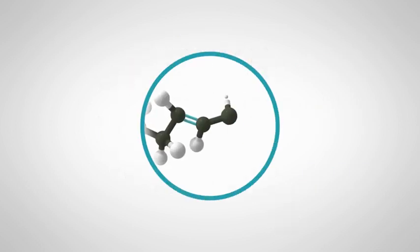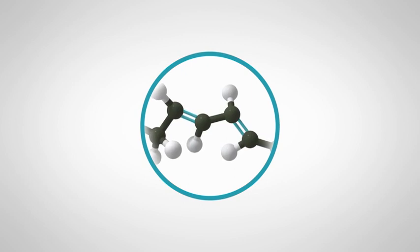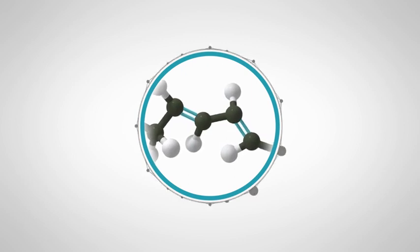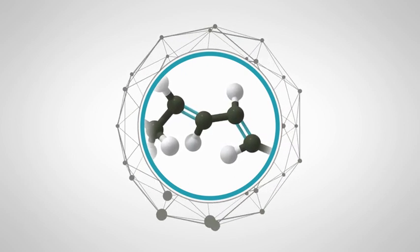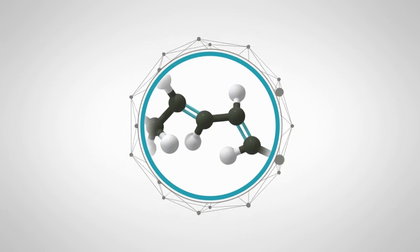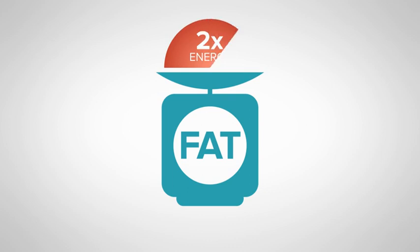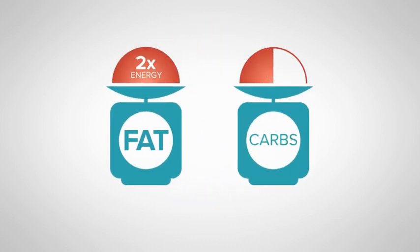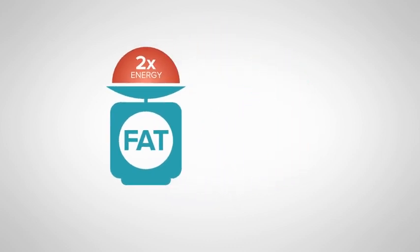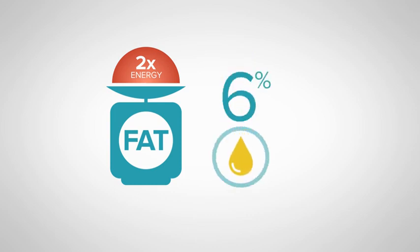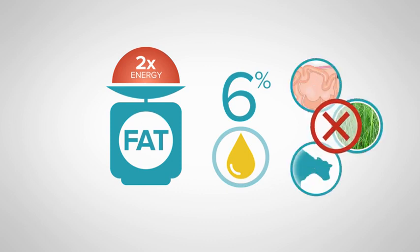The number and position of these double bonds alters the way the fatty acids are digested and can also alter their biological activity. On a weight basis, fat contains more than twice the energy content of carbohydrates. However, only a small amount — no more than about 6% — can be included in the cow's diet. This is because too much fat in the diet can negatively affect rumen function, reduces dry matter intake and cow performance.